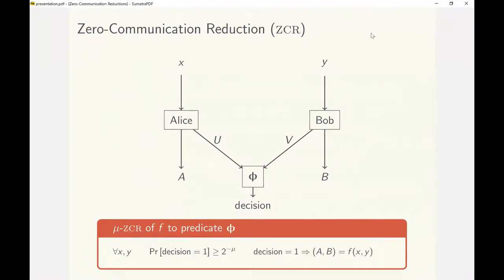In a zero communication reduction of a function f to a predicate phi, Alice and Bob have inputs x and y. Based on the input, each party locally produces a candidate output along with an input to the predicate phi.